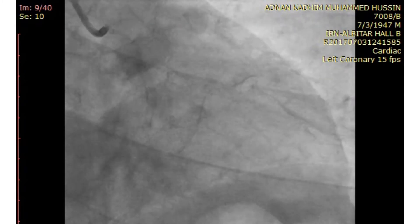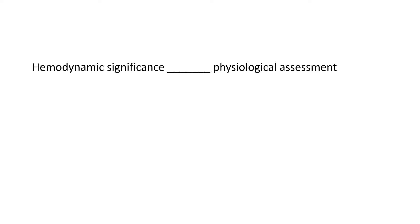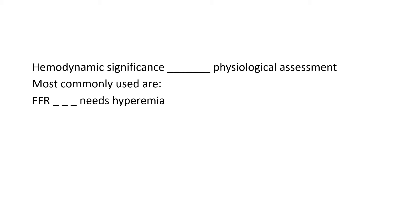To assess the hemodynamic significance of an intermediate lesion, physiological assessment studies are required. The most commonly used tests are the FFR, which needs hyperemia usually induced by adenosine, and the iFR, which does not require hyperemia.